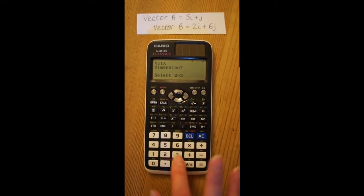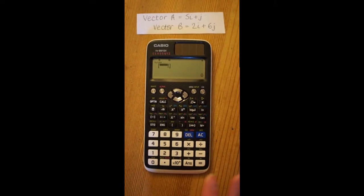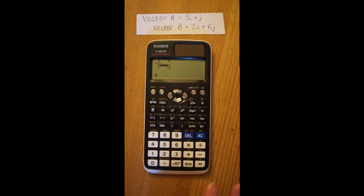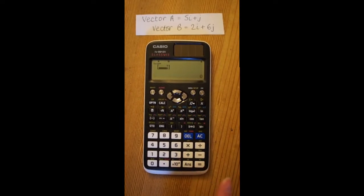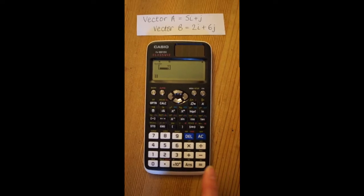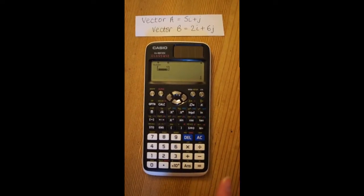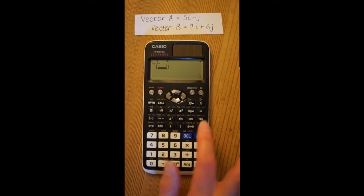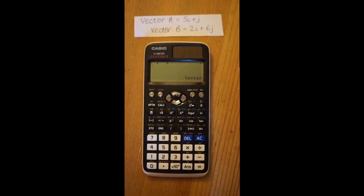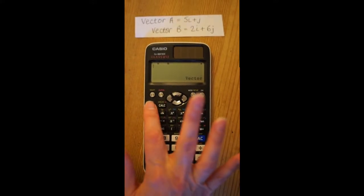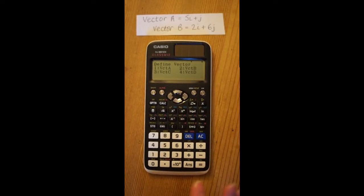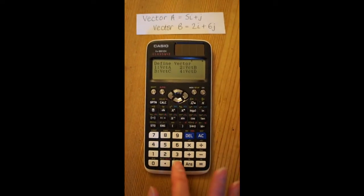Select 2 because we're working in two dimensions. Press 5 to enter the i coefficient, then equals. Press 1 to enter the j coefficient, then press equals — that's vector A entered. Press AC to enter vector B, press option again, 1 for define vector, and choose 2 for vector B.